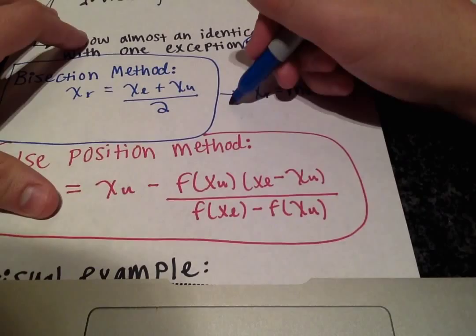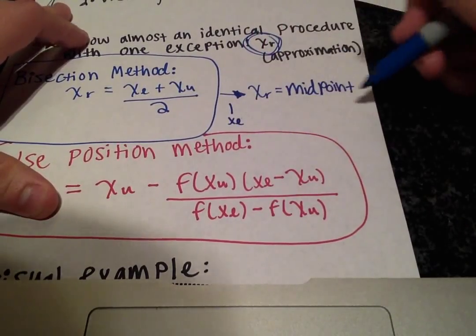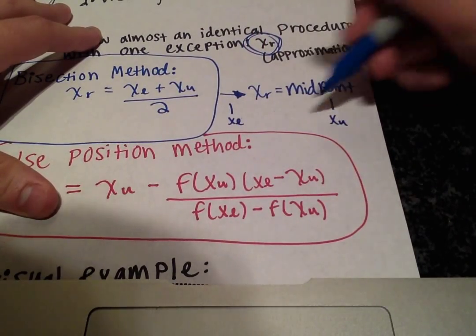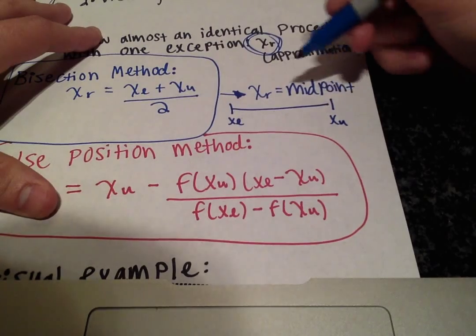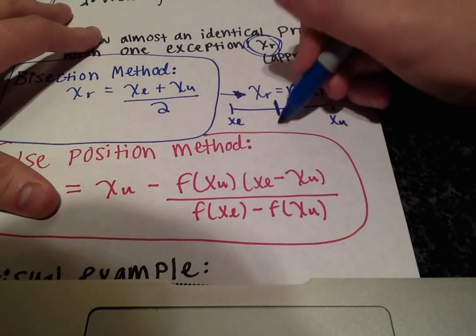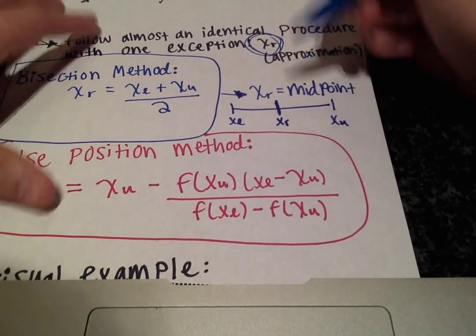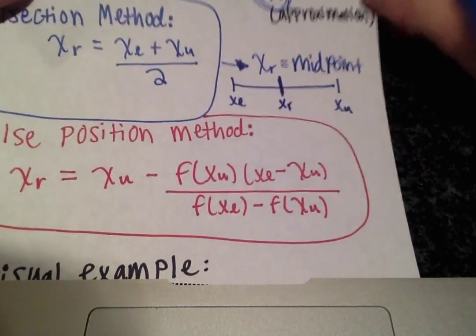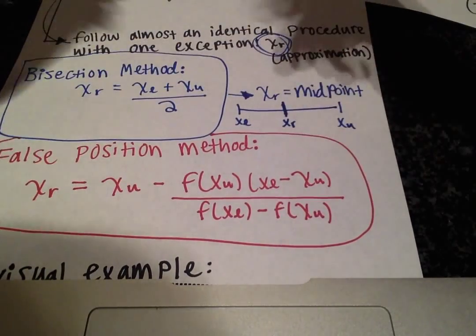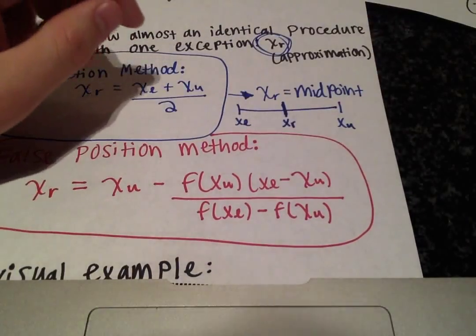So when you have your x of l and your x of u, x_r will be exactly in the middle, equally spaced from both sides. And that is where the false position method is different.